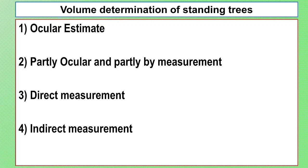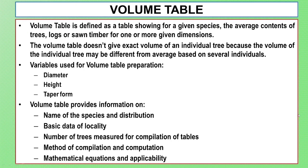The next topic is the volume table. Volume table is very important in the area of proper density. The volume table is a table showing, for a given species, the average contents of trees, logs, or stone timber for one or more given dimensions.